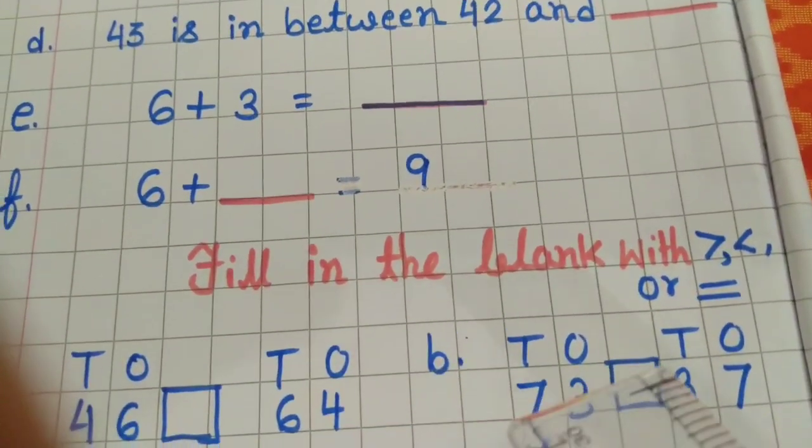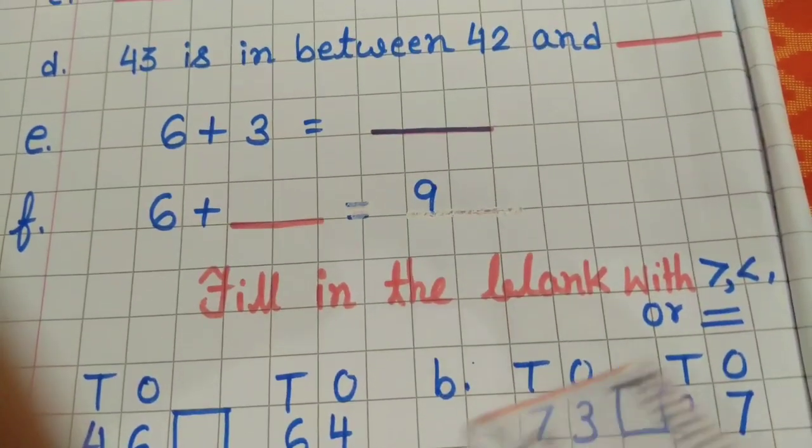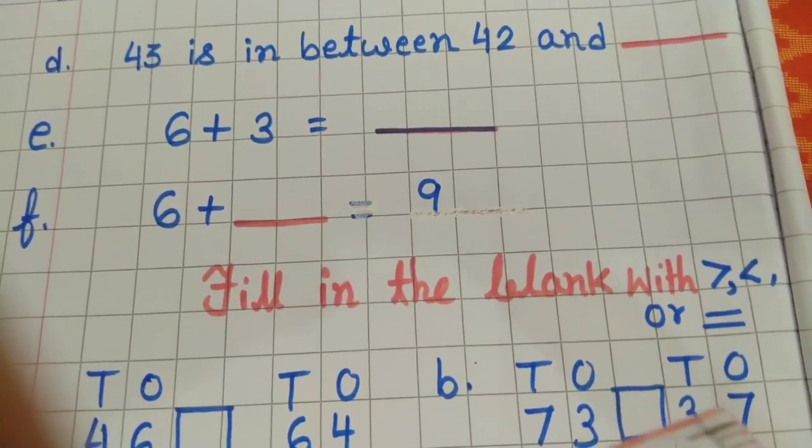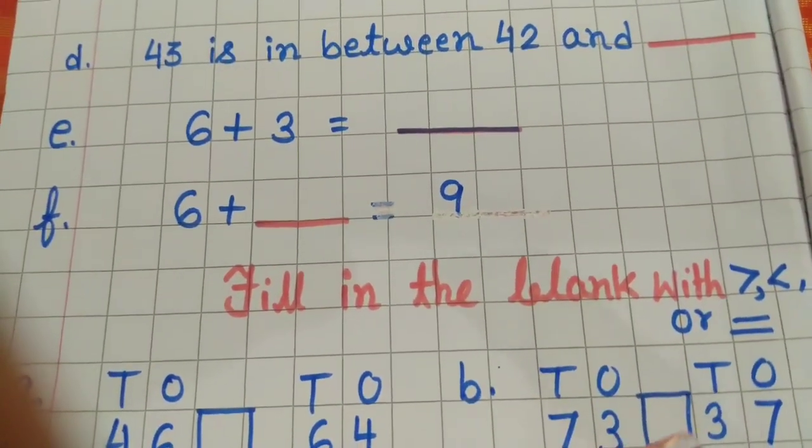And here also I have written two numbers, 73 and 37. So here also you have to put the correct sign. Understood, everybody?